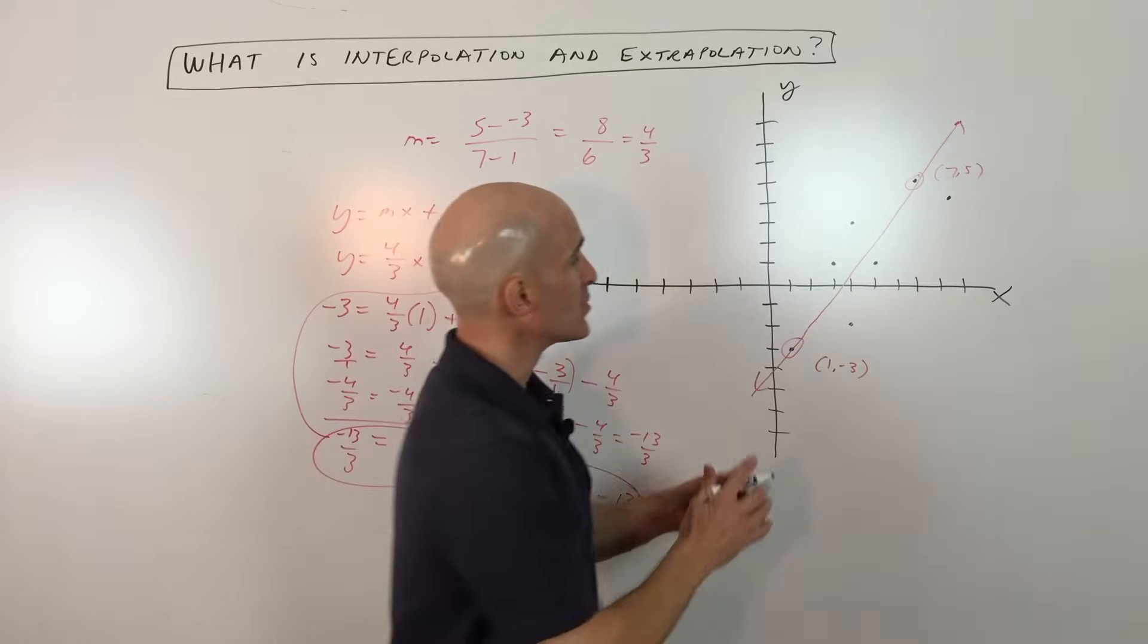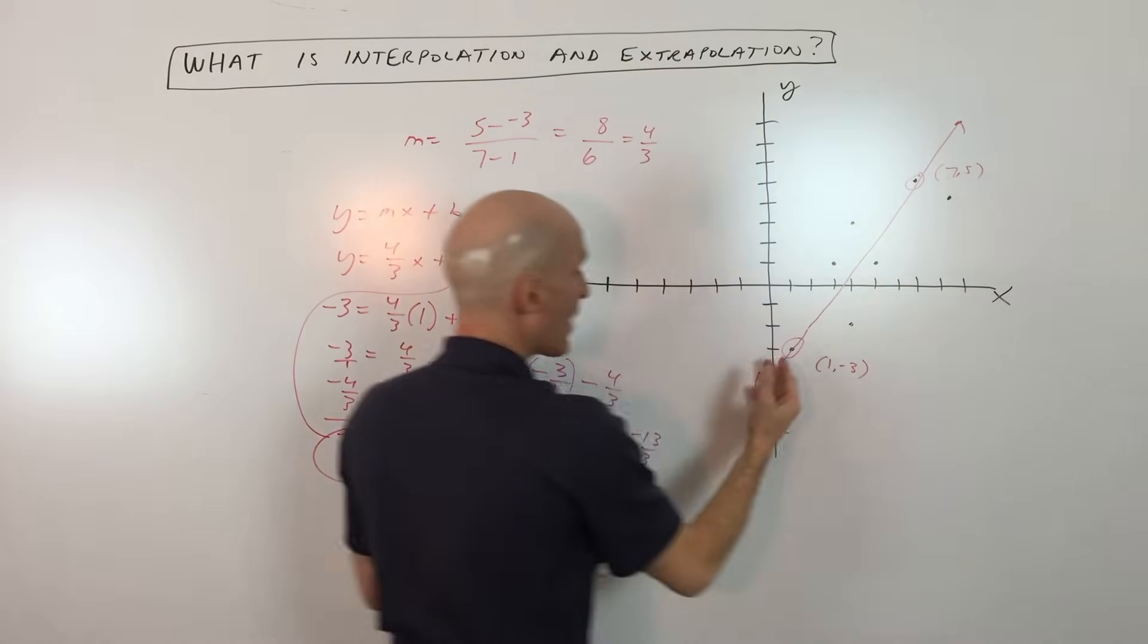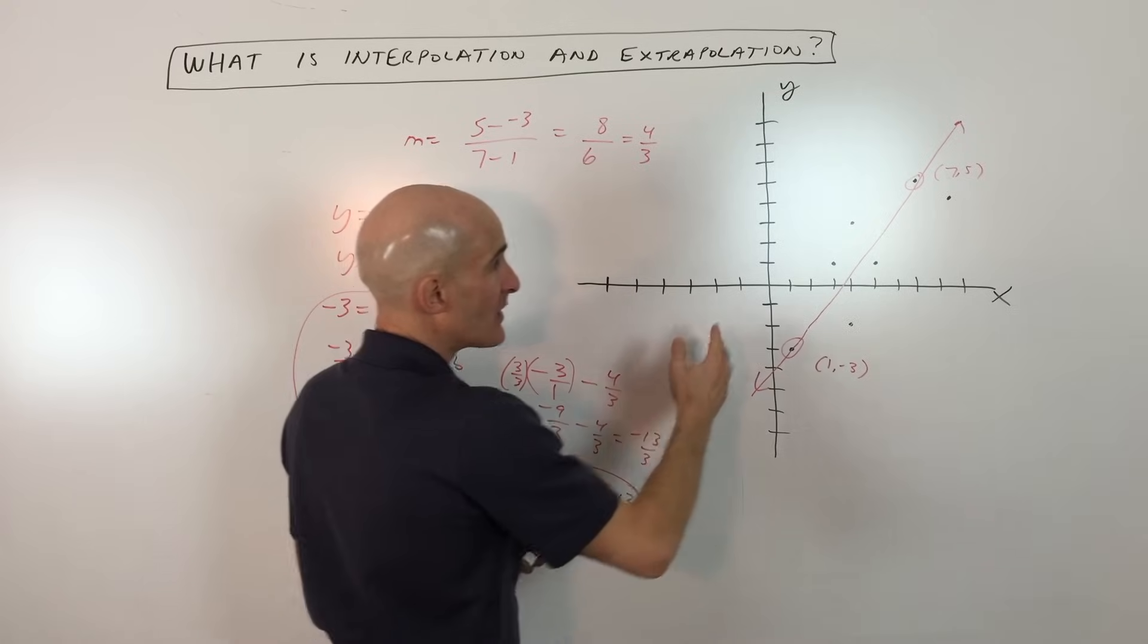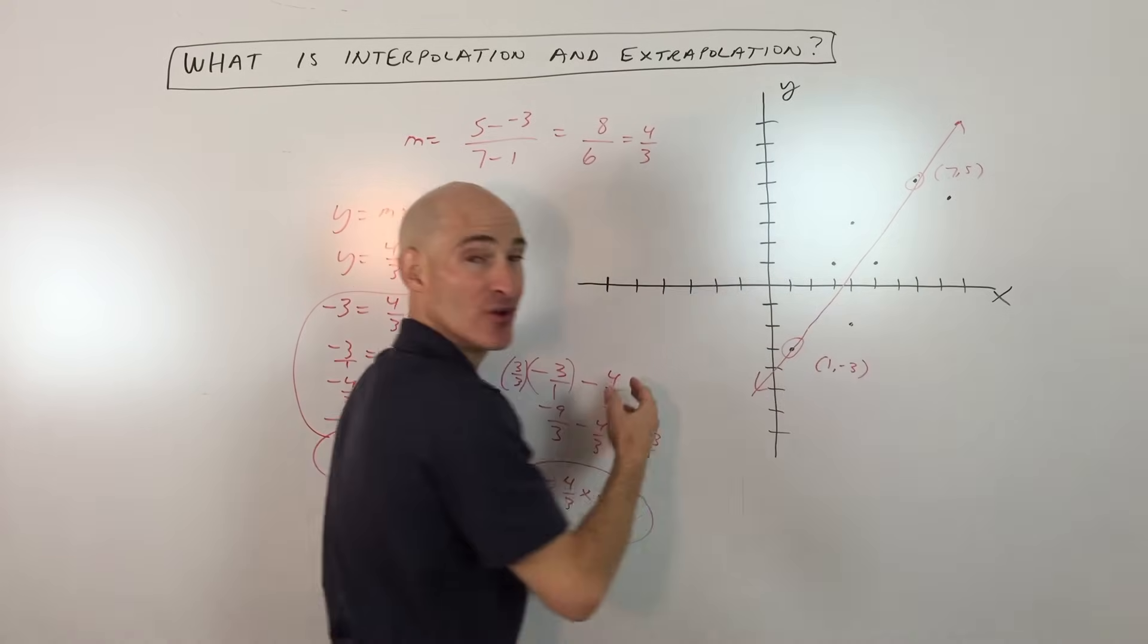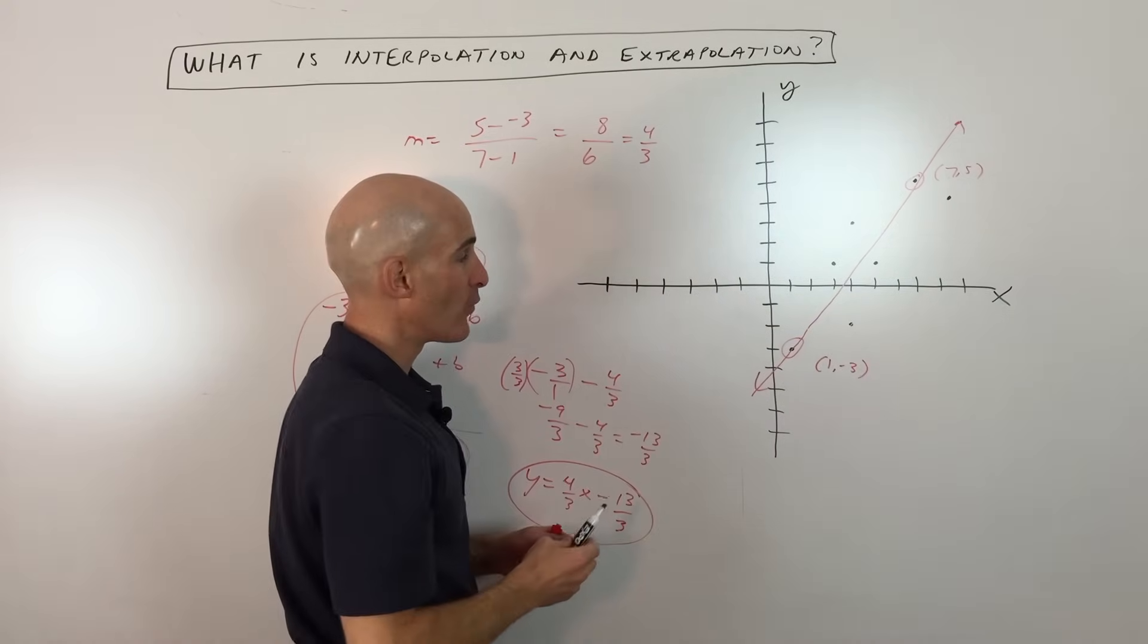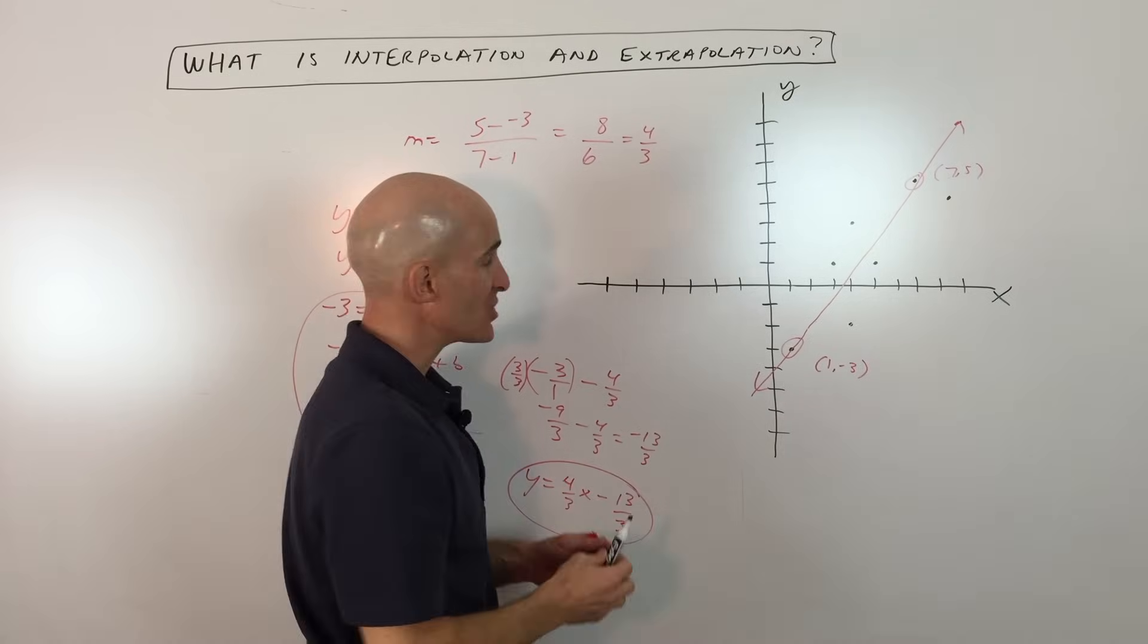Now, if you wanted to find out a point that was way out over here or way out over here, that's kind of beyond what you took your data points for. That's called extrapolation.